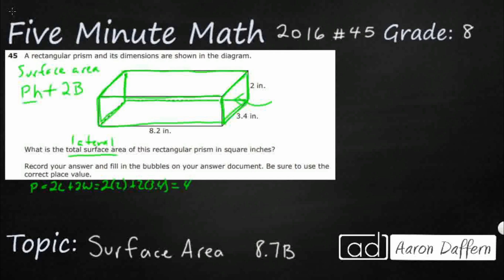That's going to equal four plus 6.8. All right, so our perimeter is going to be 10.8.